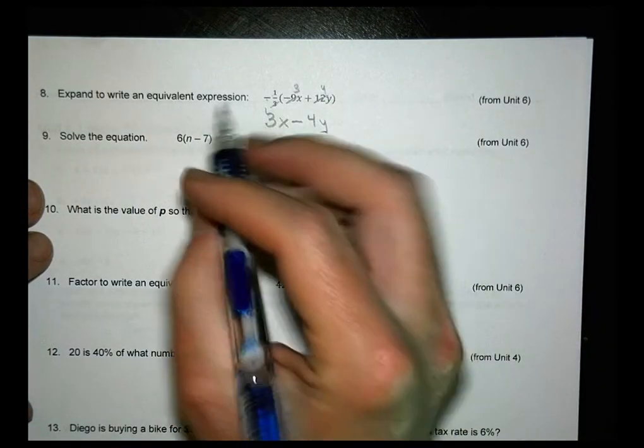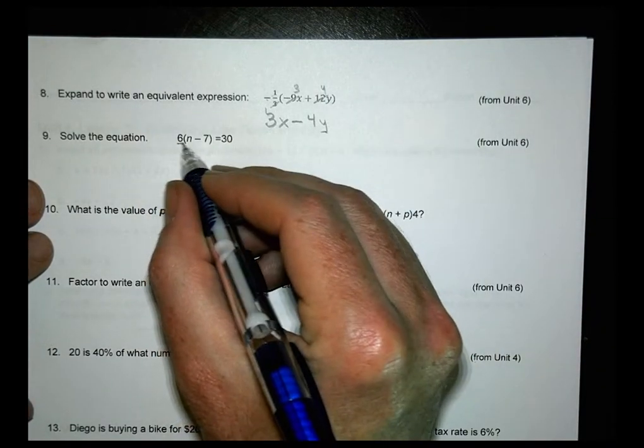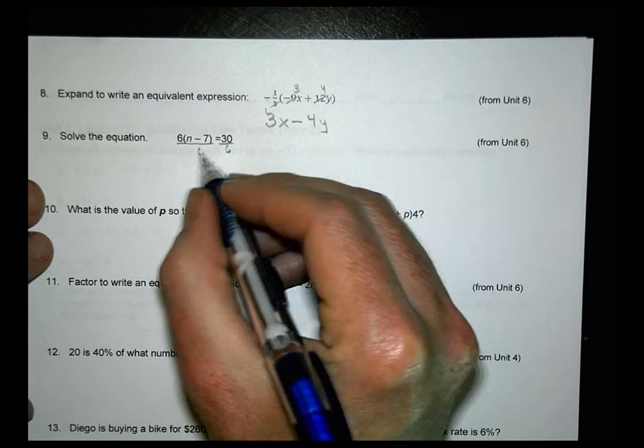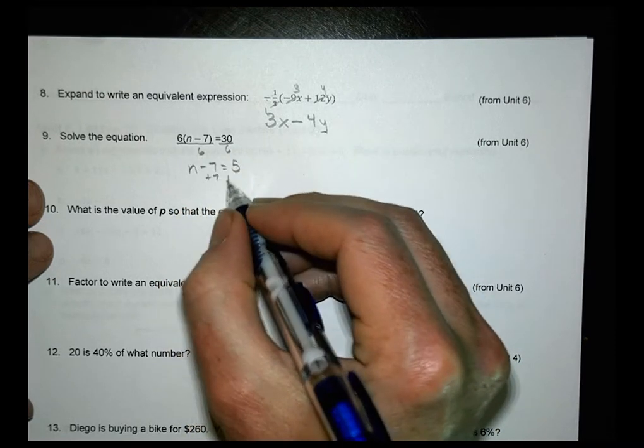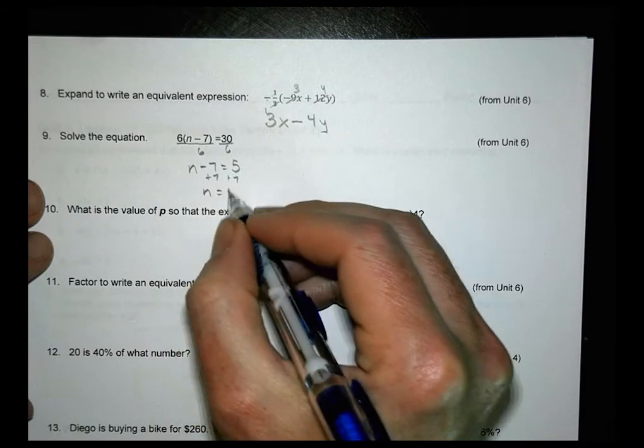All right. Number 9. Solve the equation. Sure. I can solve first by dividing both sides by 6. n minus 7 equals 5. I can add 7 to both sides. And n equals 12.